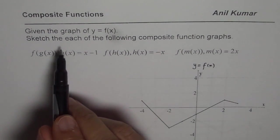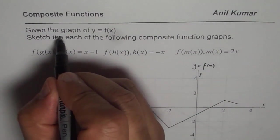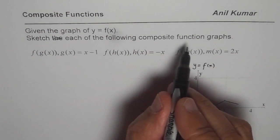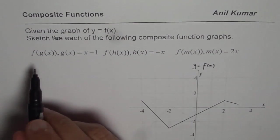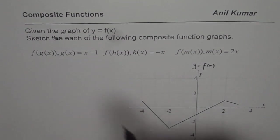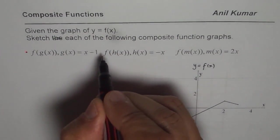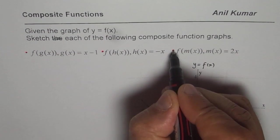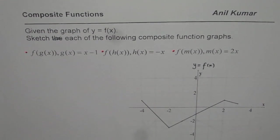Sketch each of the following composite function graphs. We are given three functions here. It's kind of mixed up, so this is one function, this is the second function, that is the third function. We will see how by composition of the function the graph changes.